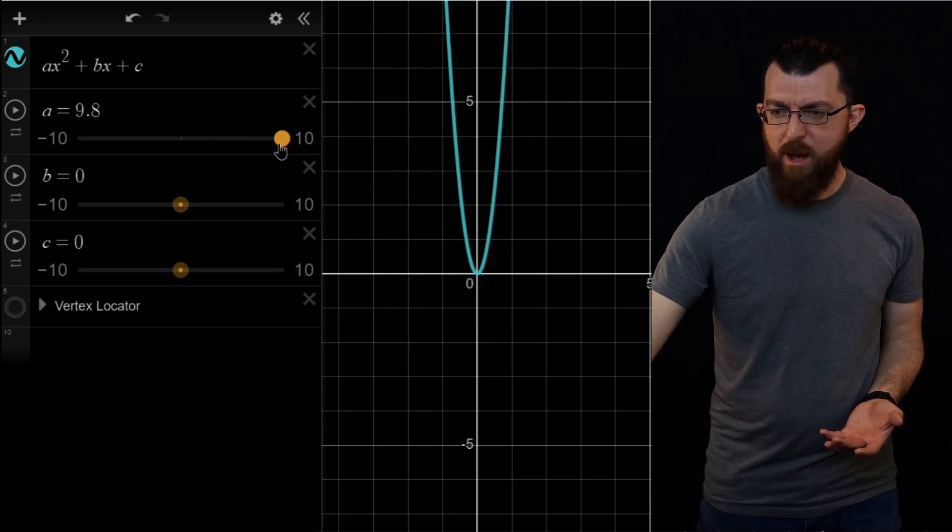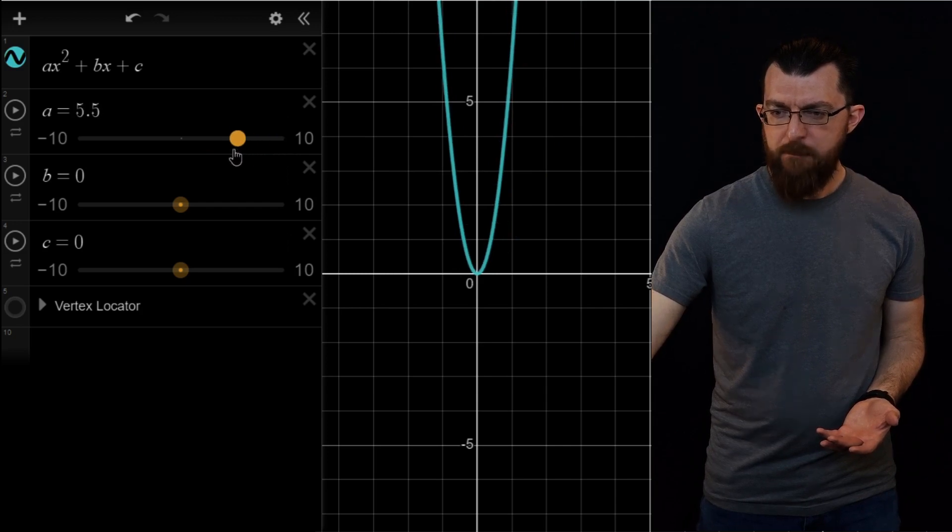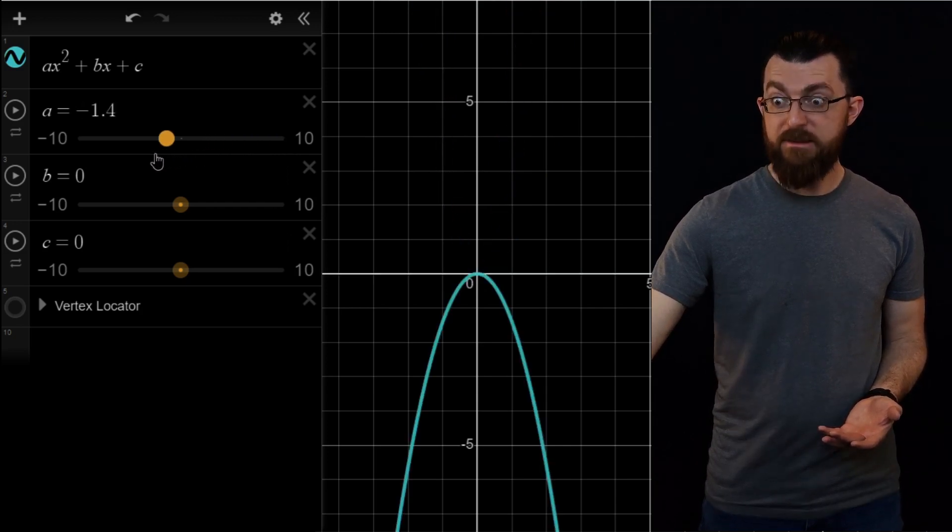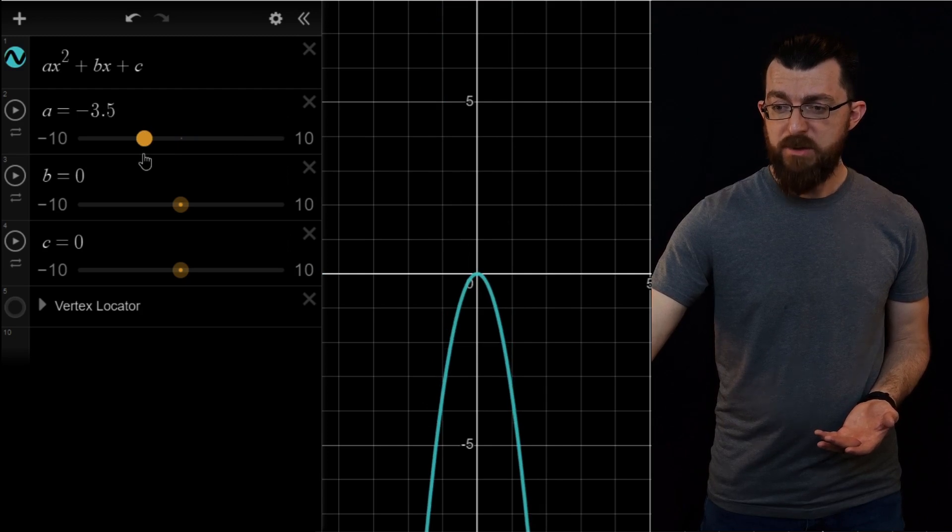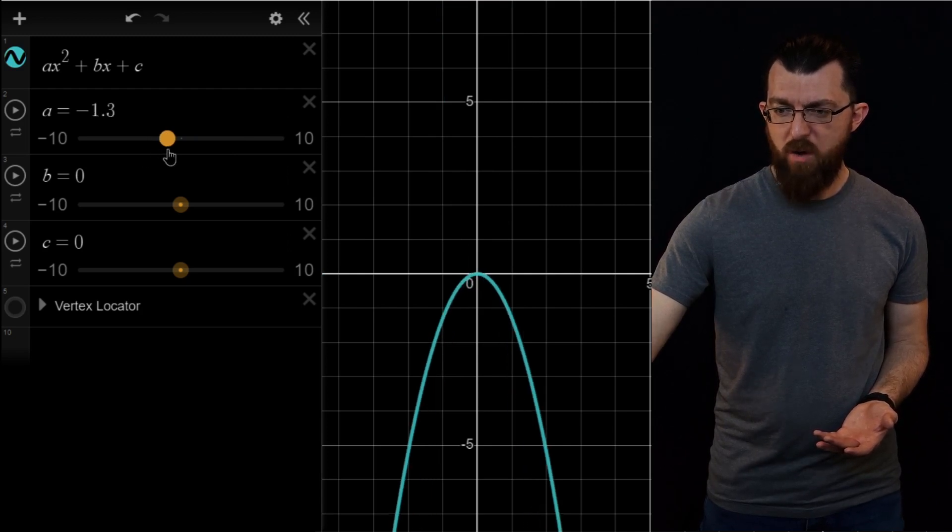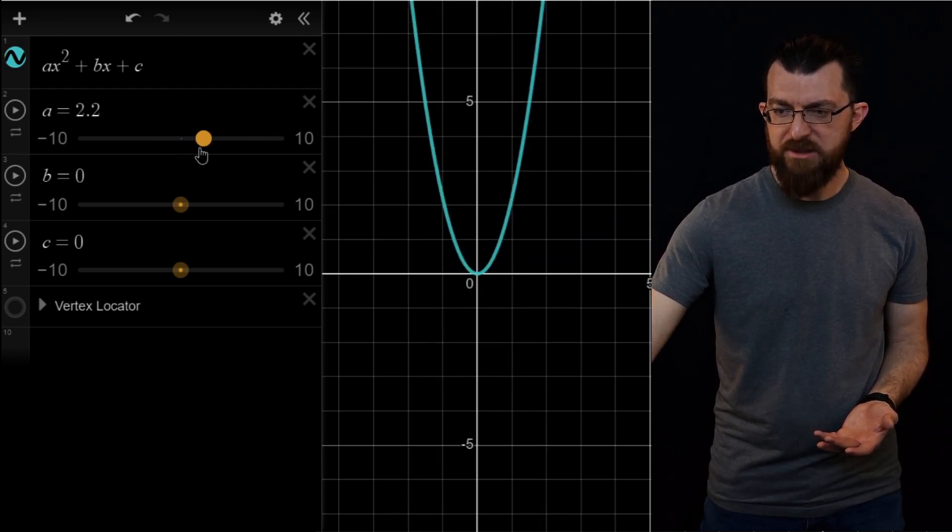Looks like if we move a up, it gets a little bit more pinchy. Move a down, it widens out until it flattens and just turns upside down. So let's see, what would we call this kind of change, this kind of motion?